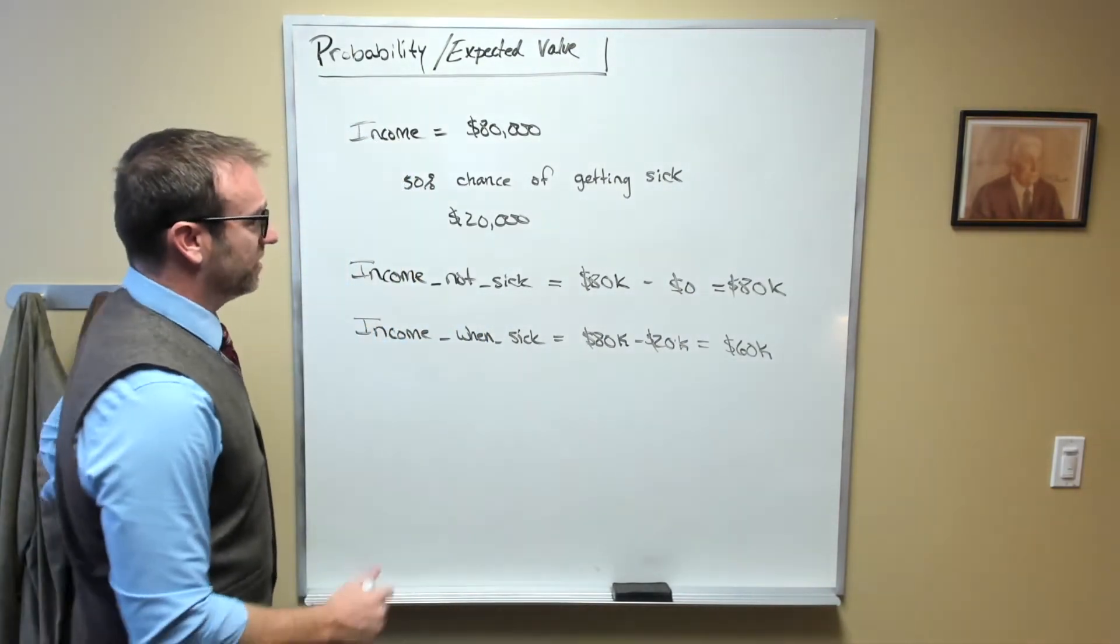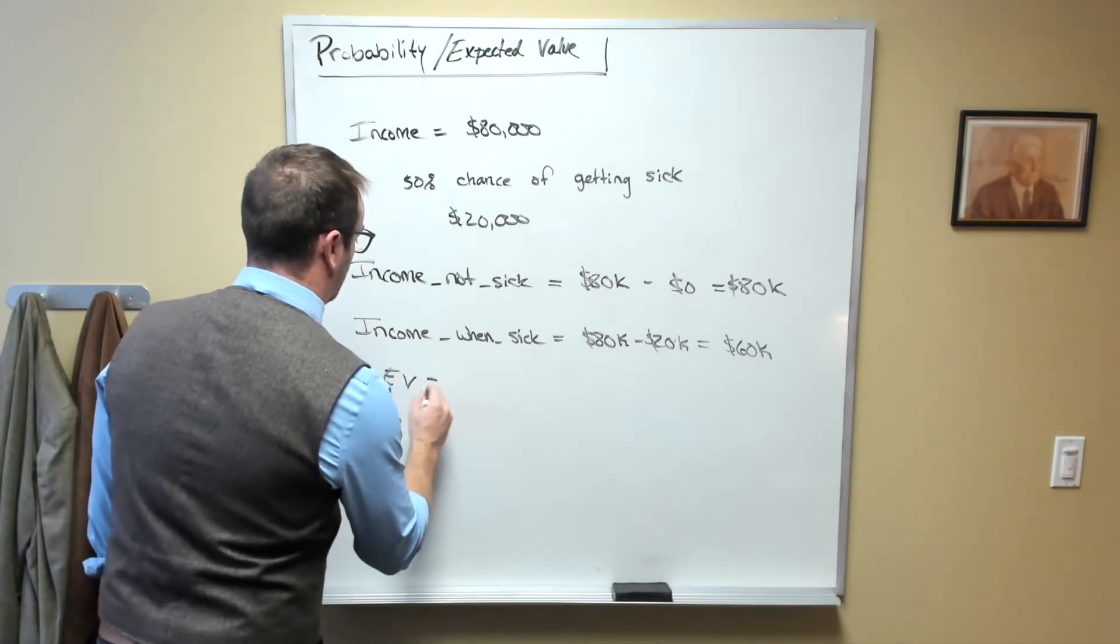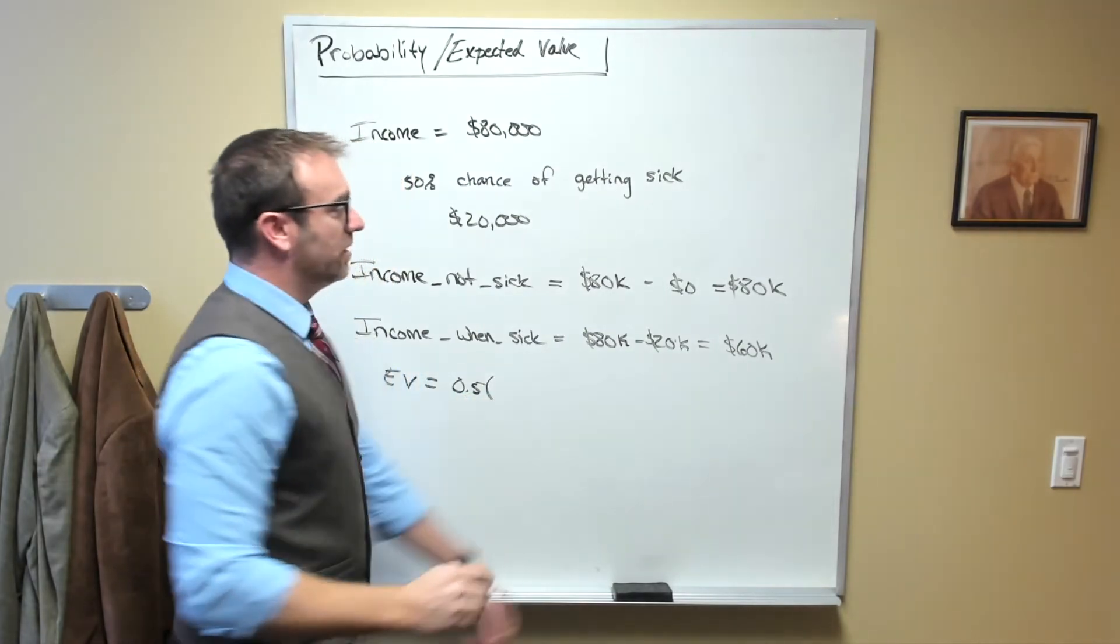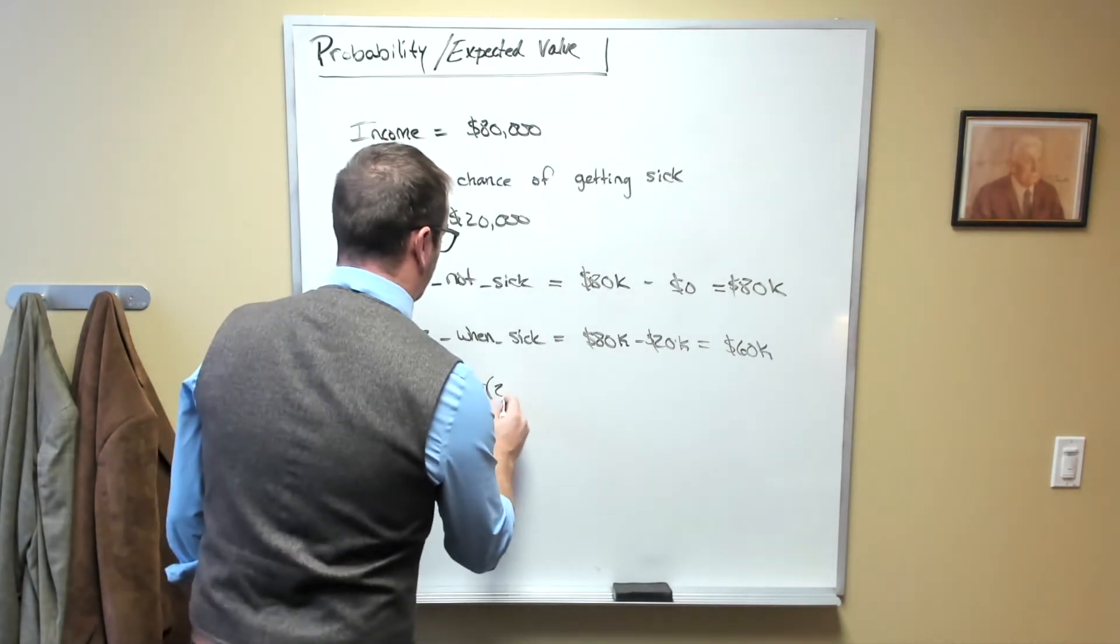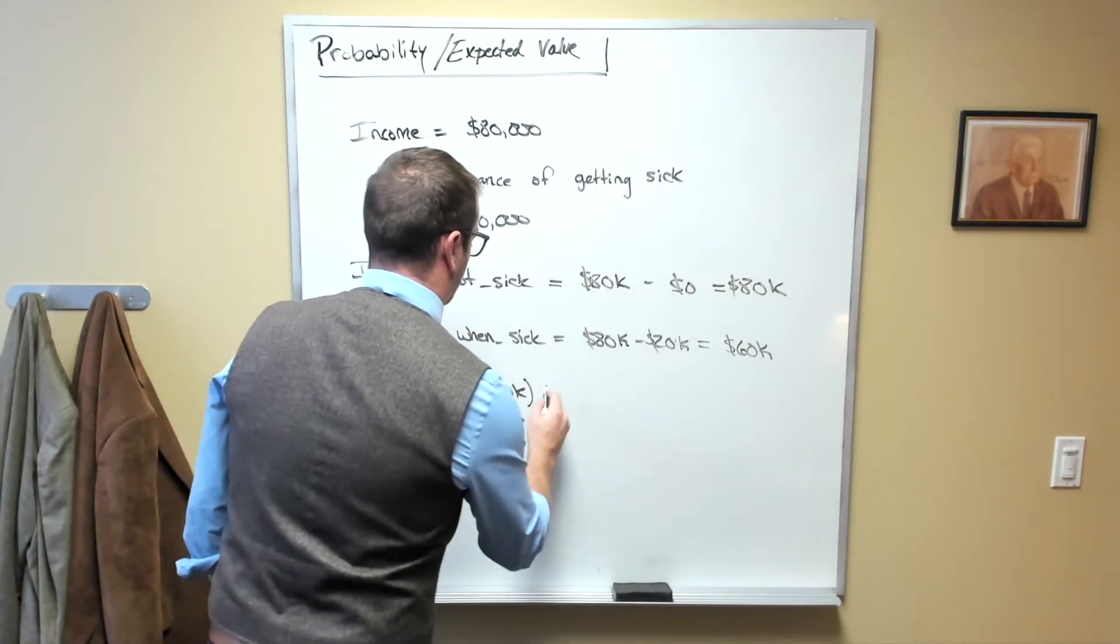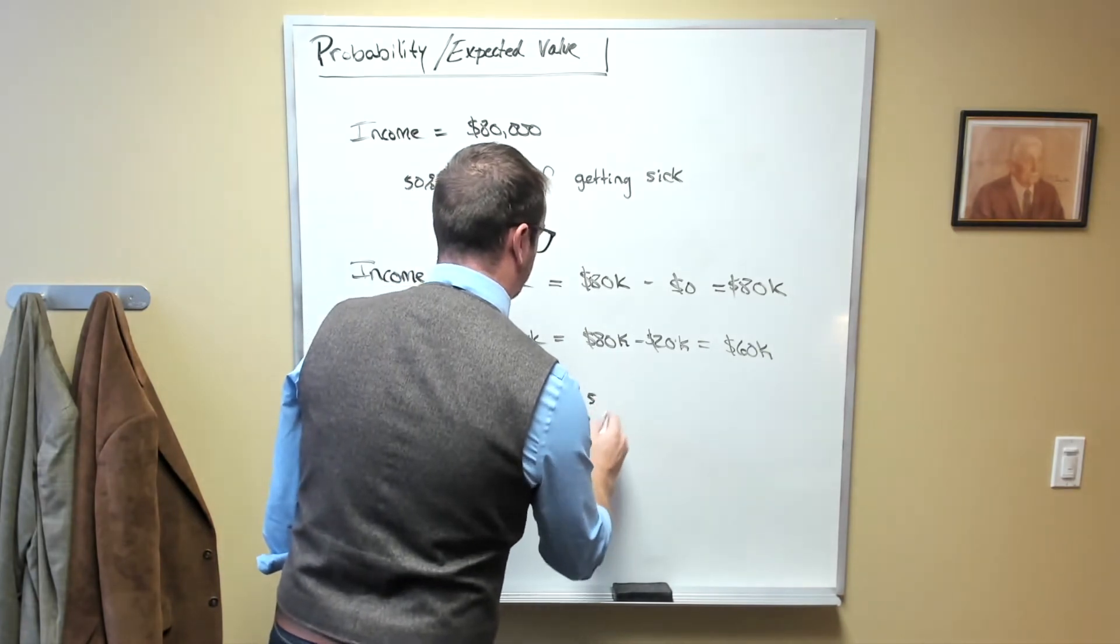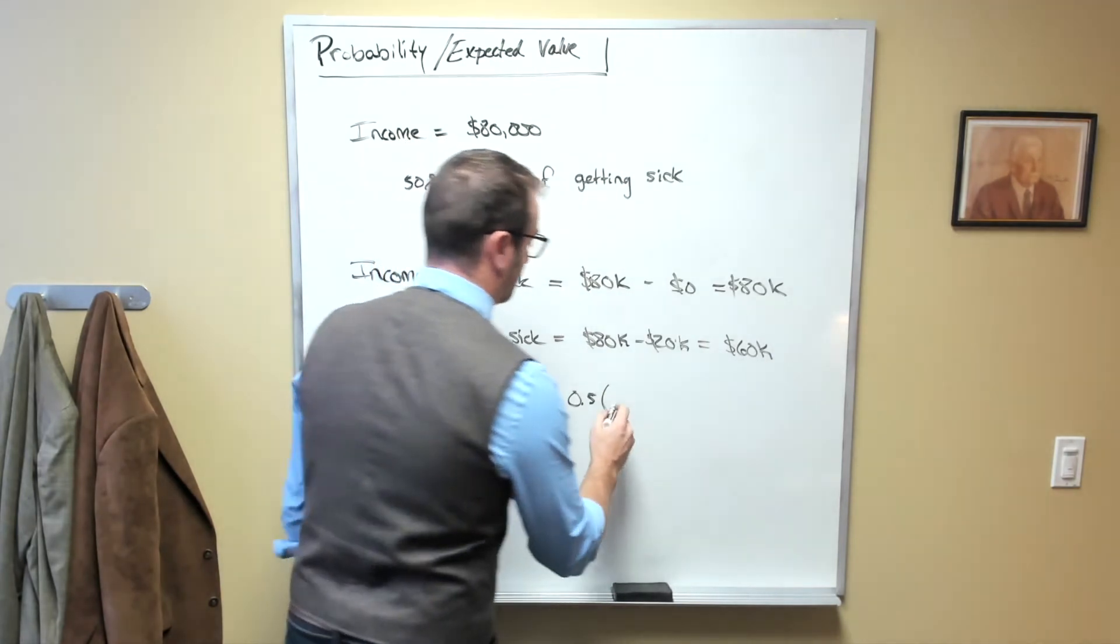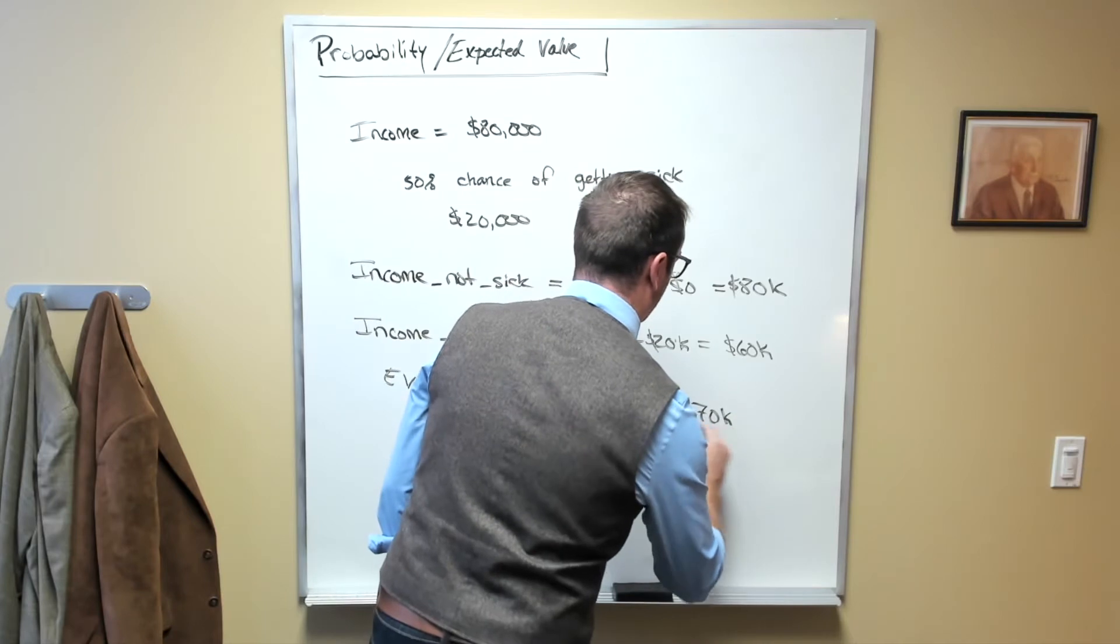So your expected income would be the probability of not getting sick, which is in this case 50%, 0.5 times your income net of expenses when you're not sick, which would be $80,000 plus the probability of you getting sick times your income when sick net of expenses, $60,000, which is equal to $70,000.